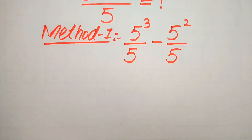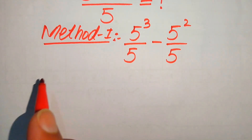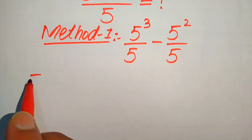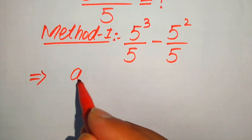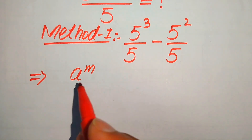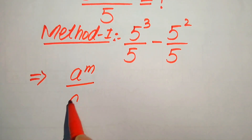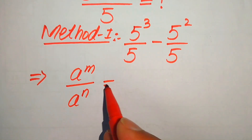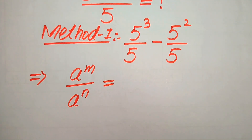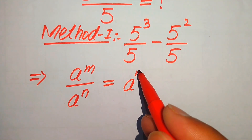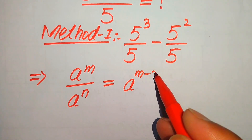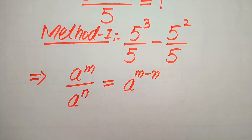In the next step we use the exponent law: if we have a to the power of m divided by a to the power of n, it equals a to the power of m minus n.